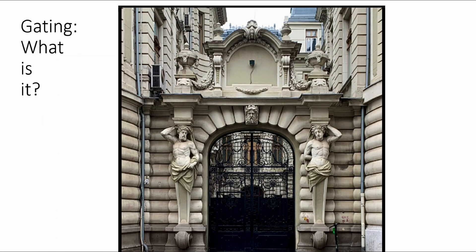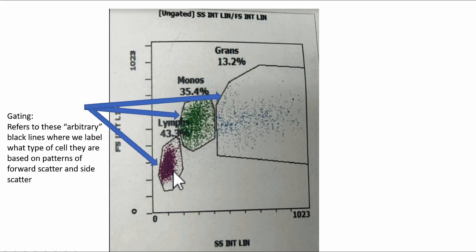All right. Let's talk about gating. Not this type of gating. Gating refers to these arbitrary black lines where we assign a label on what these cells are based on the forward scatter and side scatter patterns.